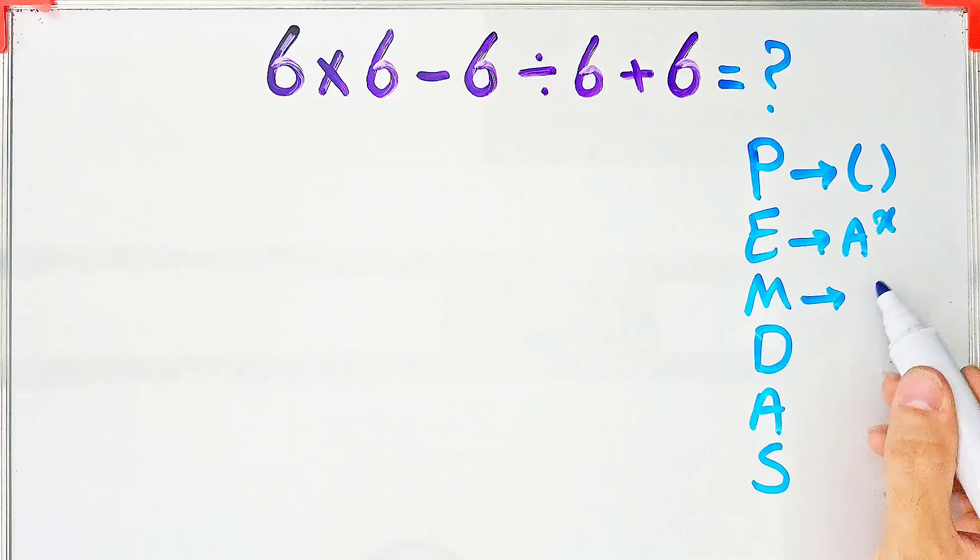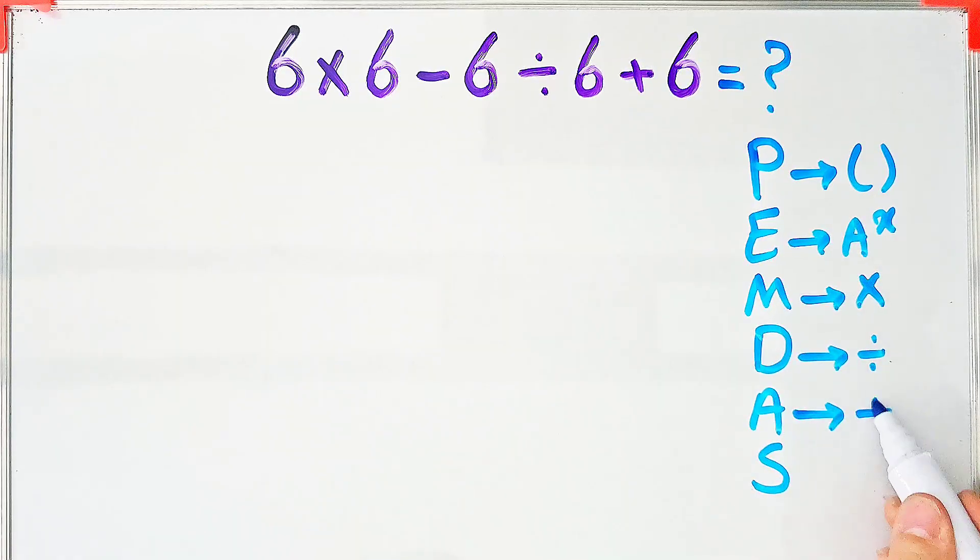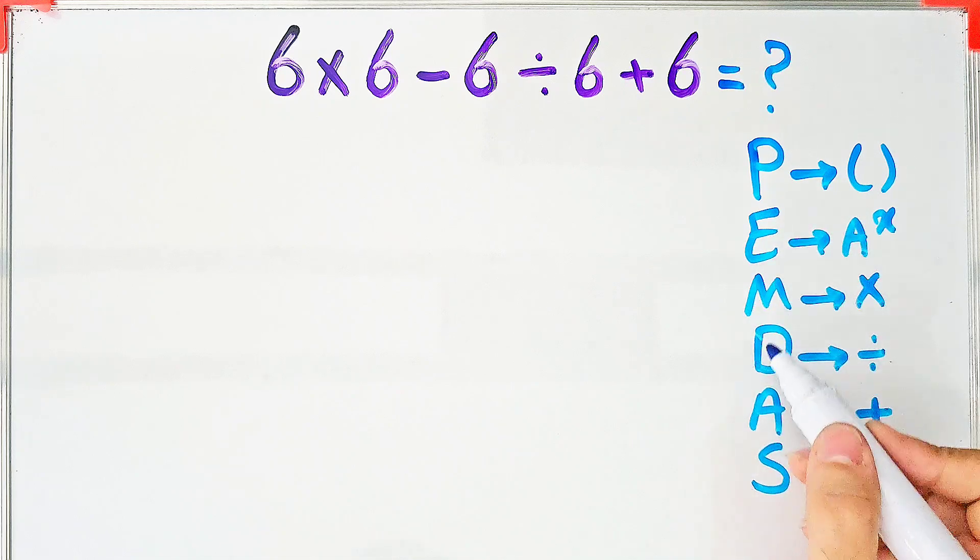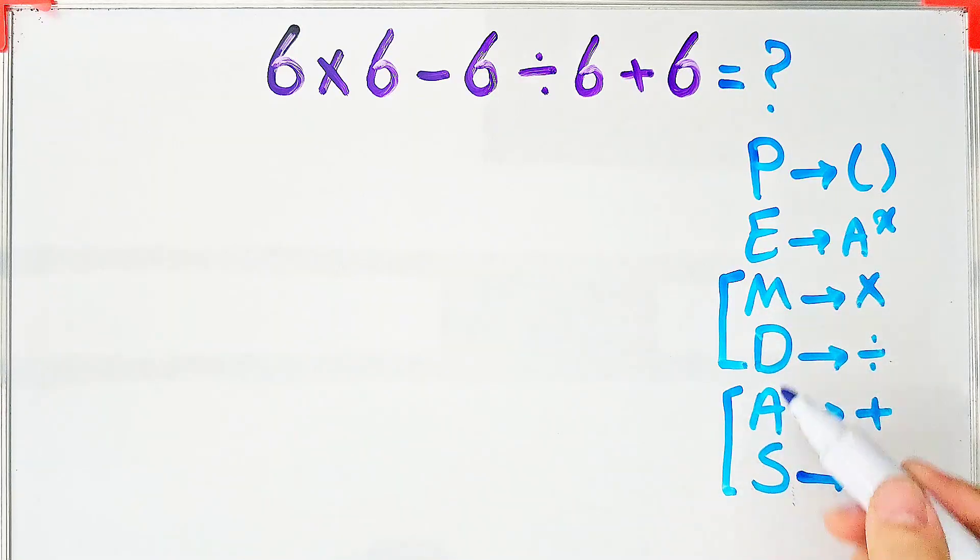D stands for division, A stands for addition, and S stands for subtraction. The multiplication and division have the same level of priority. Also, addition and subtraction have the same priority. When we have both in an expression, we start from the left and simplify.